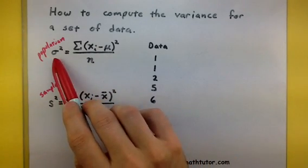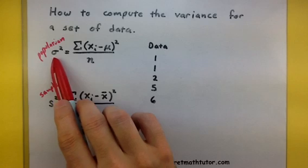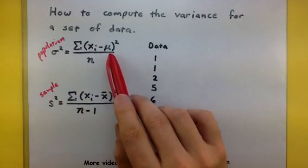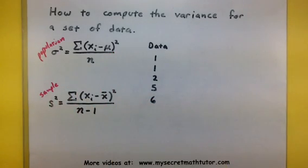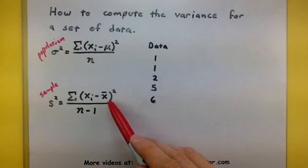Now for the population, we use the lowercase sigma and we use the mu. When we're looking at the formula for a sample, we use s and we use x-bar.